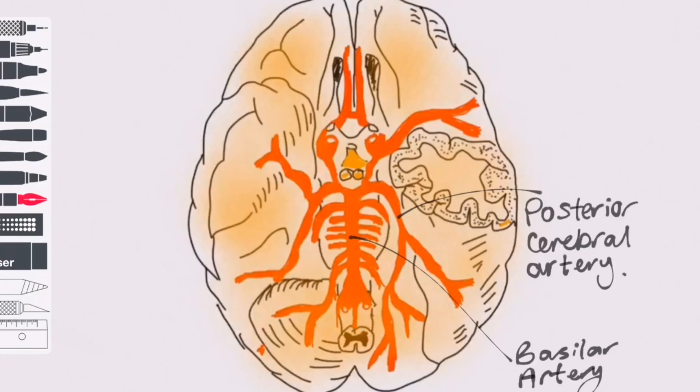To summarise, the symptoms of a PCA stroke will depend on the structures involved, but may manifest as contralateral homonymous hemianopia, contralateral sensory disturbance, alexia without agraphia, and more generalised symptoms such as headache, dizziness and confusion.